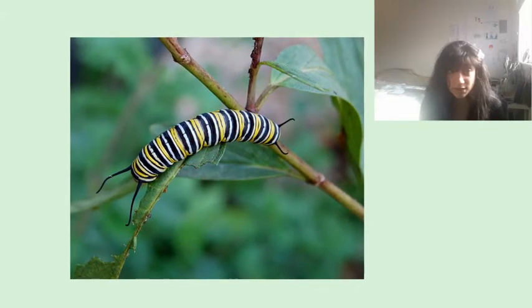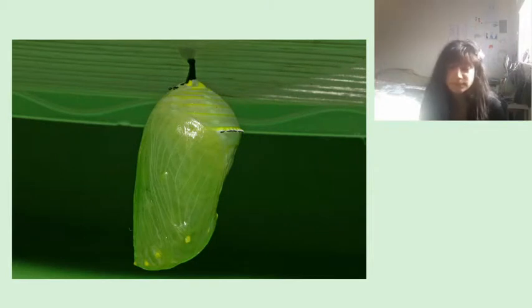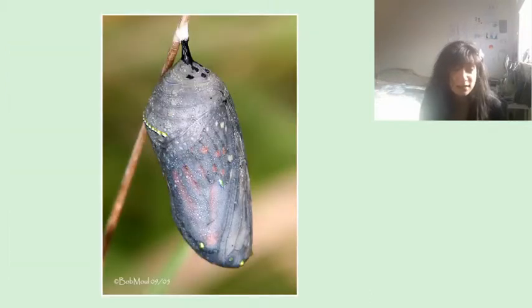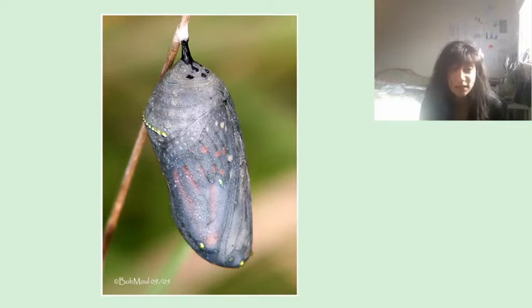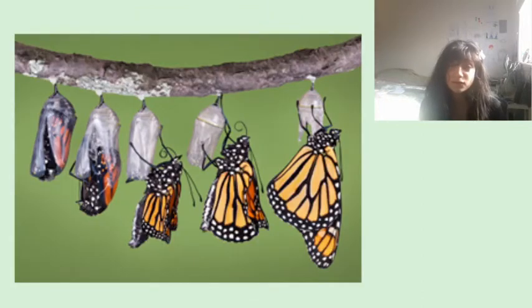The biggest transformation, however, happens in the chrysalis stage. The caterpillar attaches itself to an object with its own silk and sheds its skin one last time. Underneath this last skin is a hard skin called the chrysalis. The chrysalis, often green or brown to mix in with its surroundings, hangs from a leaf or a branch. The caterpillar tissue breaks down inside the chrysalis and the adult insect is formed.